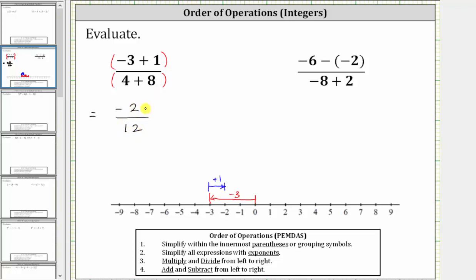To simplify, we divide the numerator and denominator by two. Negative two divided by two is equal to negative one, and 12 divided by two is equal to six. The expression simplifies to negative one-sixth.